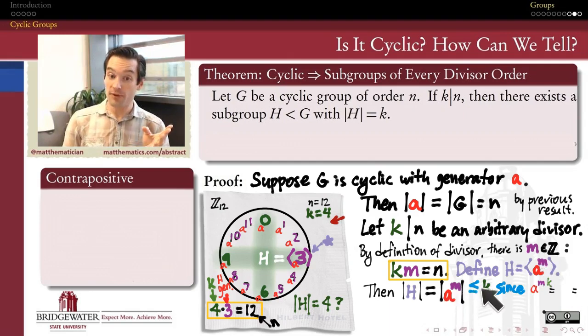The order of a to the m is less than or equal to k for sure, because if I take the kth power of this element, that's a to the m to the k. But m times k is equal to n by assumption and by the commutative property of multiplication of integers. Since the order of a is n, this is equal to the identity. Therefore, the m times kth power of a, which is the same as the kth power of a to the m, is the identity. So, the order of this element can be no more than k.